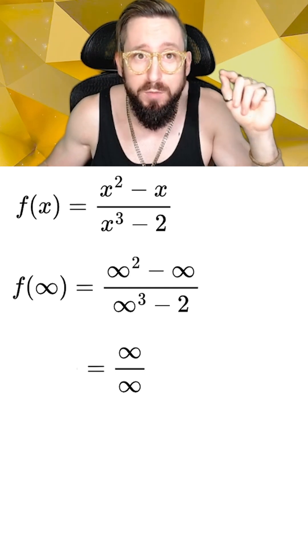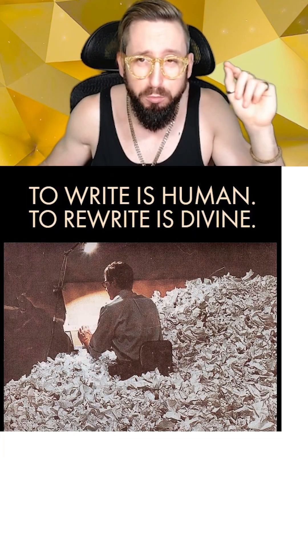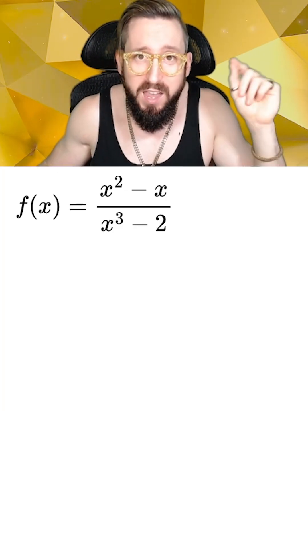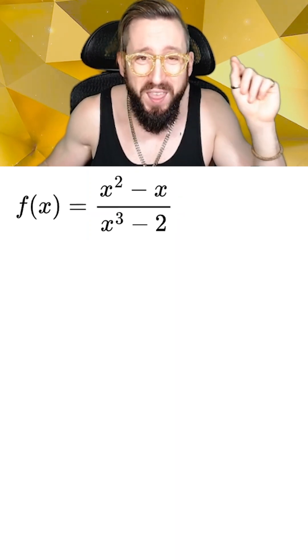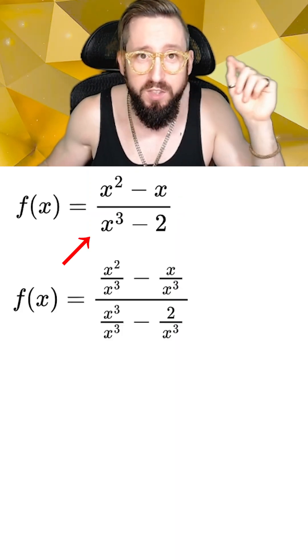But whenever a limit is undefined, it usually means we can do more work with algebra tricks to rewrite it in a way that is defined. In the case of rational functions, a good algebra trick is to divide both the top and the bottom by the highest effective power of x, which in this case is x to the third.